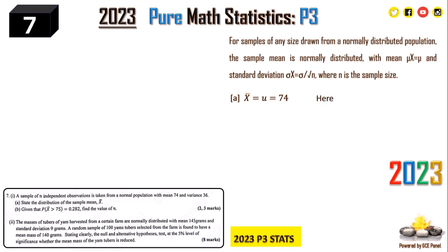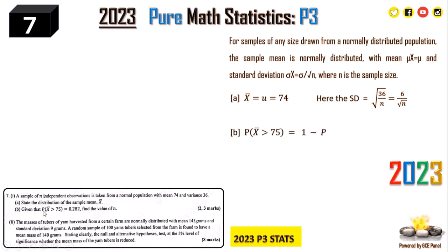The sample standard deviation is given by the square root of the population variance divided by n, which is root 36 over n, giving us 6 over root n, where n is the sample size. So X̄ is normally distributed with mean 74 and standard deviation 6 over root n.